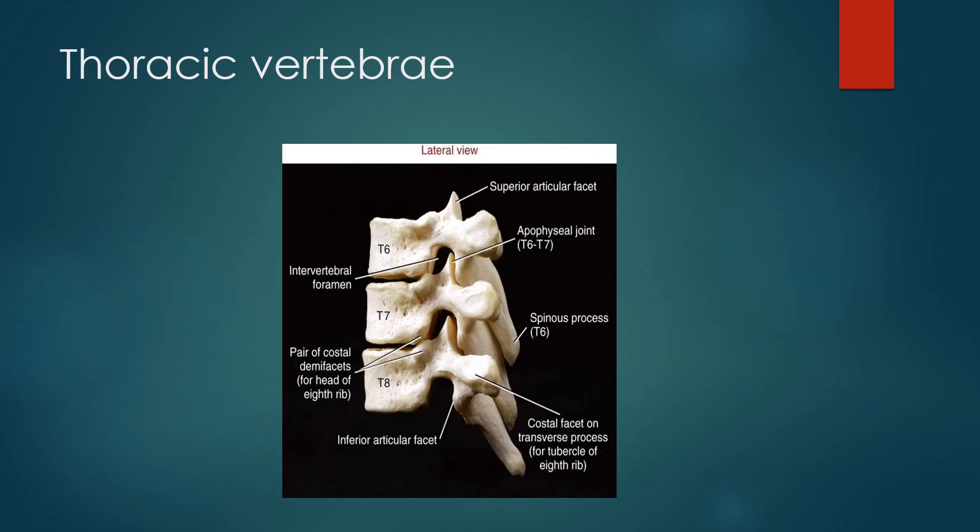This is a look at the thoracic spine from a lateral perspective. You can see how the articular processes stack together to form the intervertebral foramen where the spinal nerves exit. The shape is very different from the lumbar spine, and the spinous processes are very steep — something you're well aware of if you've ever placed a thoracic epidural.